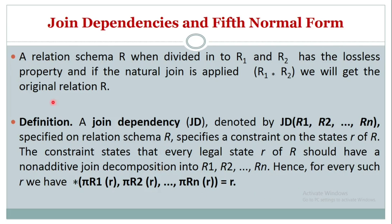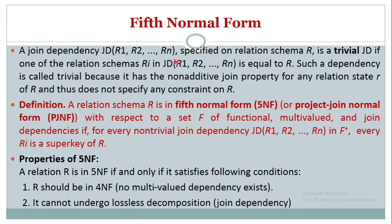Now we'll understand fifth normal form. First, let us understand trivial joint dependency. A joint dependency JD(R1, R2, ..., Rn) specified on relation schema R is a trivial joint dependency if one of the relation schemas Ri in the joint dependency equals R itself.